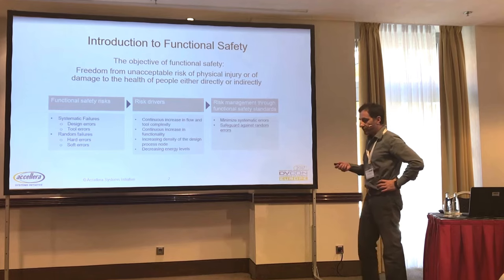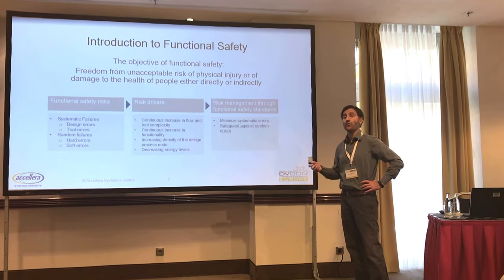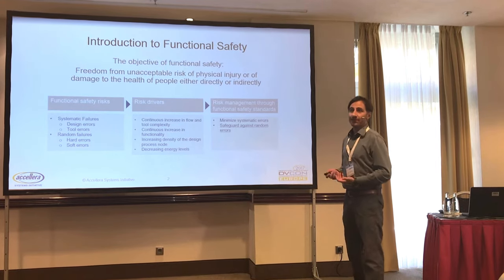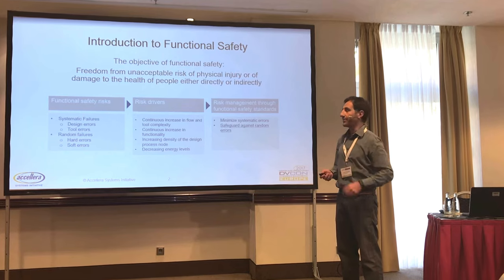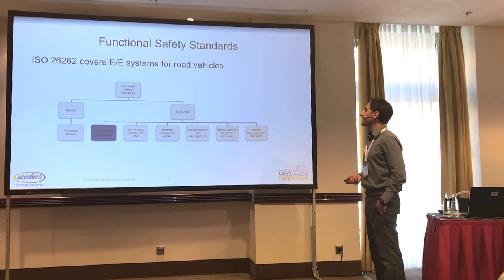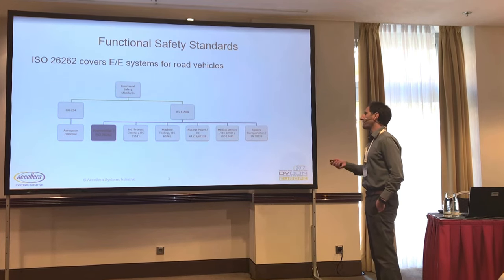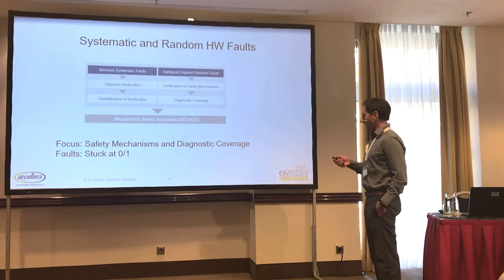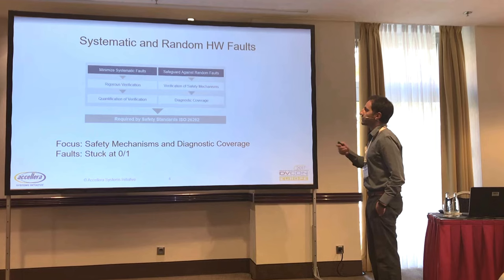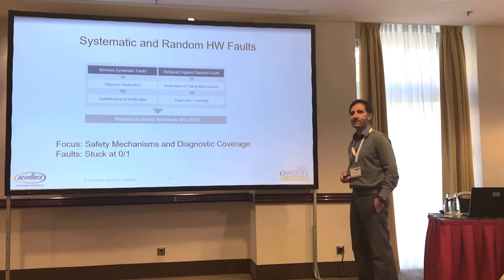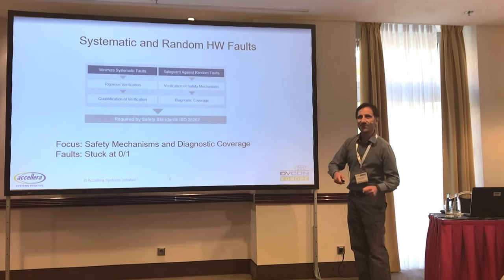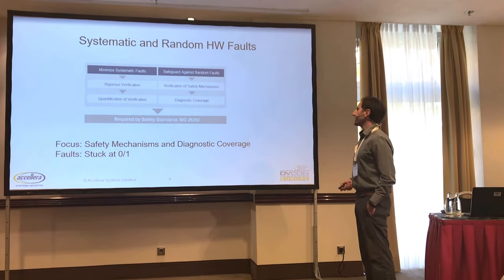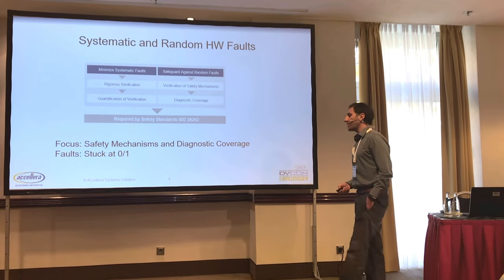Just a word on random errors: random means we don't know when they occur, so they occur unpredictably during circuit operation. But of course all our analysis is to predict something — we try to predict failure rates. The landscape of functional safety standards is large, and a lot of what we say is applicable not only to ISO 26262, the automotive standard. For systematic faults, we basically have rigorous verification — good verification on steroids, as my boss says — plus requirement tracing and quantification. For safeguarding against random faults, we introduce safety mechanisms and need to verify them.